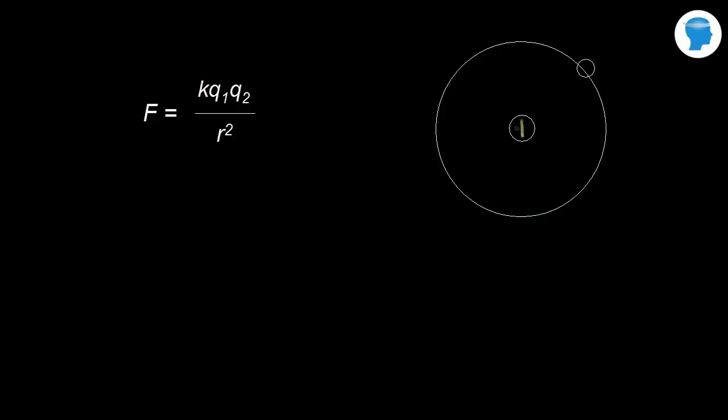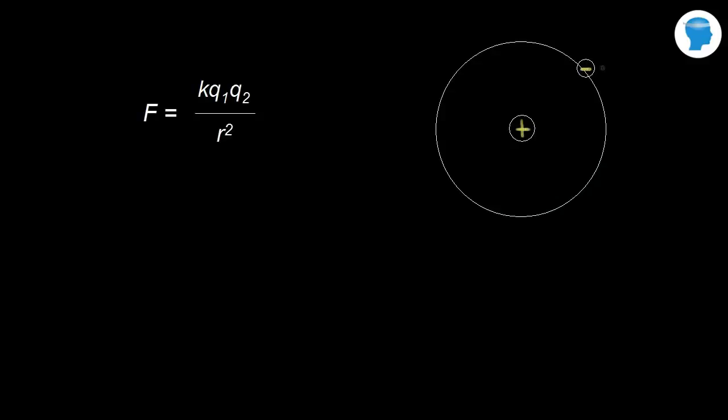In the Bohr model of the hydrogen atom, we have one proton in the nucleus — I draw a positive charge here — and a negatively charged electron orbiting the nucleus, kind of like the planets orbiting the sun. Even though the Bohr model is not reality, it is useful for understanding the concept of the atom.